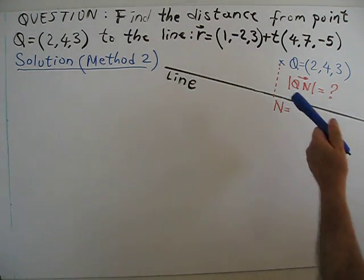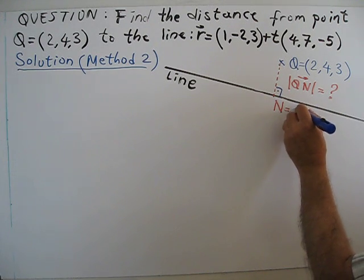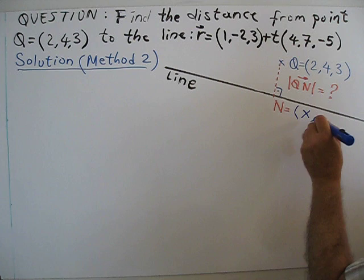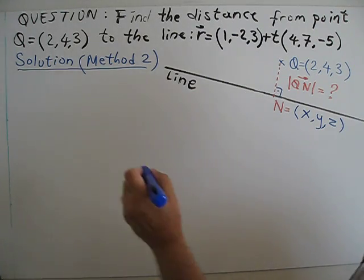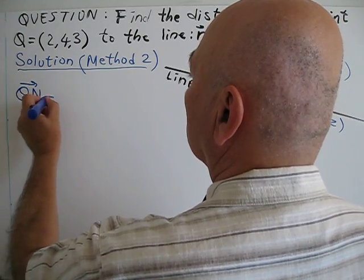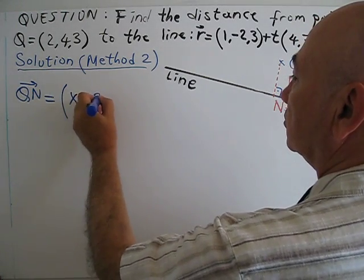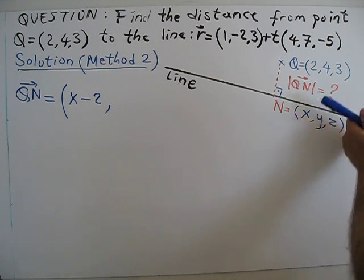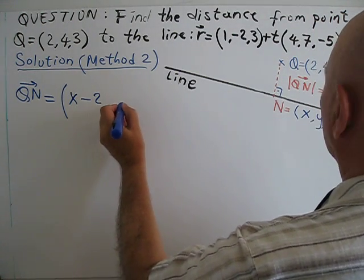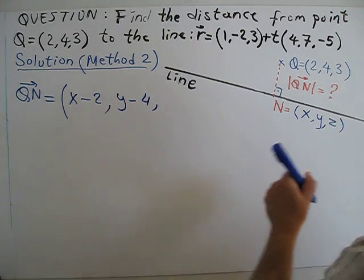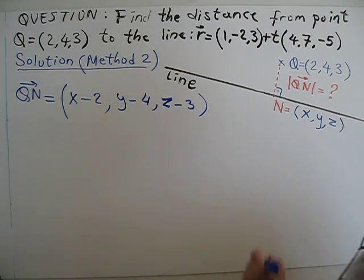First of all, I don't know the coordinate of N, so I go perpendicular from the point to the line — the distance will be perpendicular. Since I don't know N, I just write x, y, z. So how do you write vector QN? QN will be: x minus 2, then the y coordinate of N minus y coordinate of Q, so y minus 4, then z minus 3. This is the position vector QN.